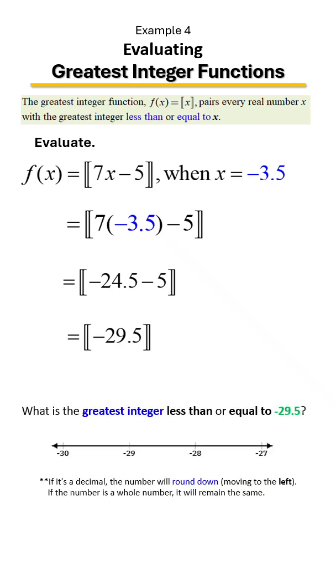What is the greatest integer less than or equal to negative 29.5? Take a look at the number line. We know negative 29.5 would be somewhere between negative 30 and negative 29. So remember, we round down, so our output would be negative 30.